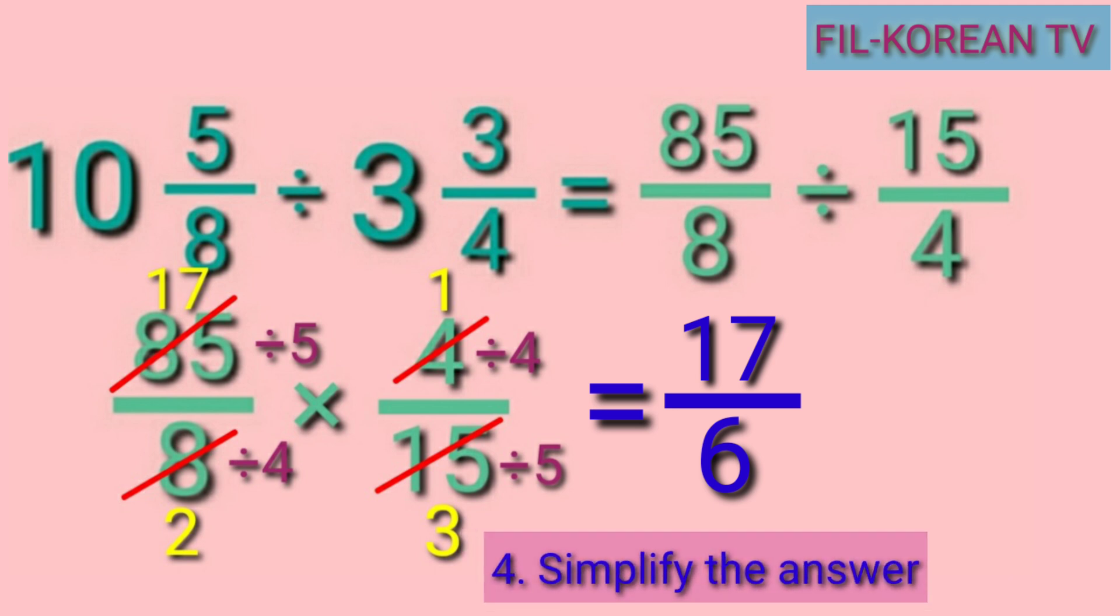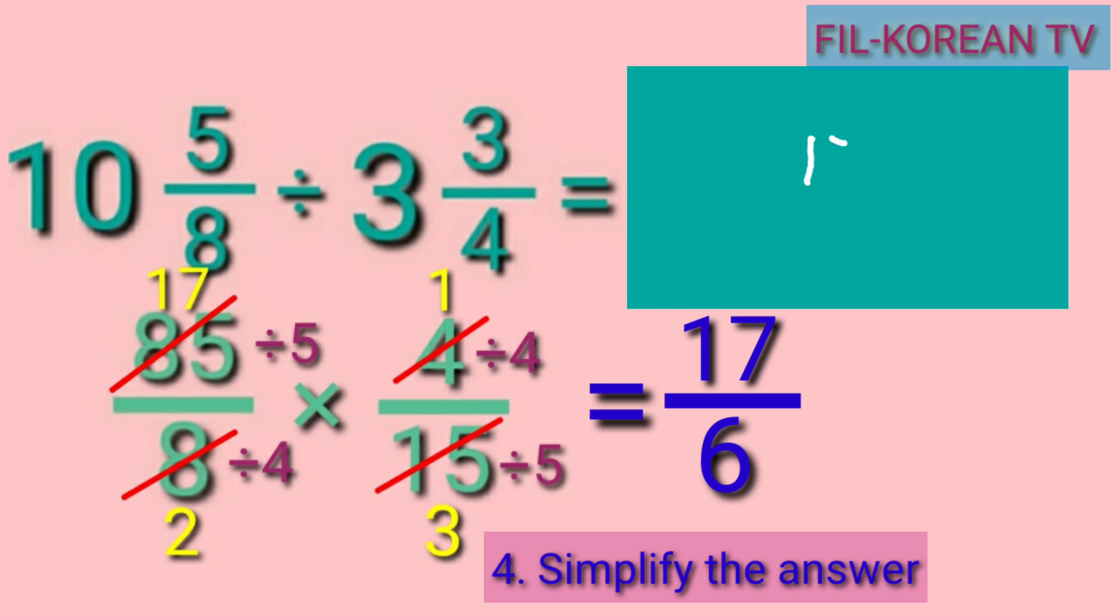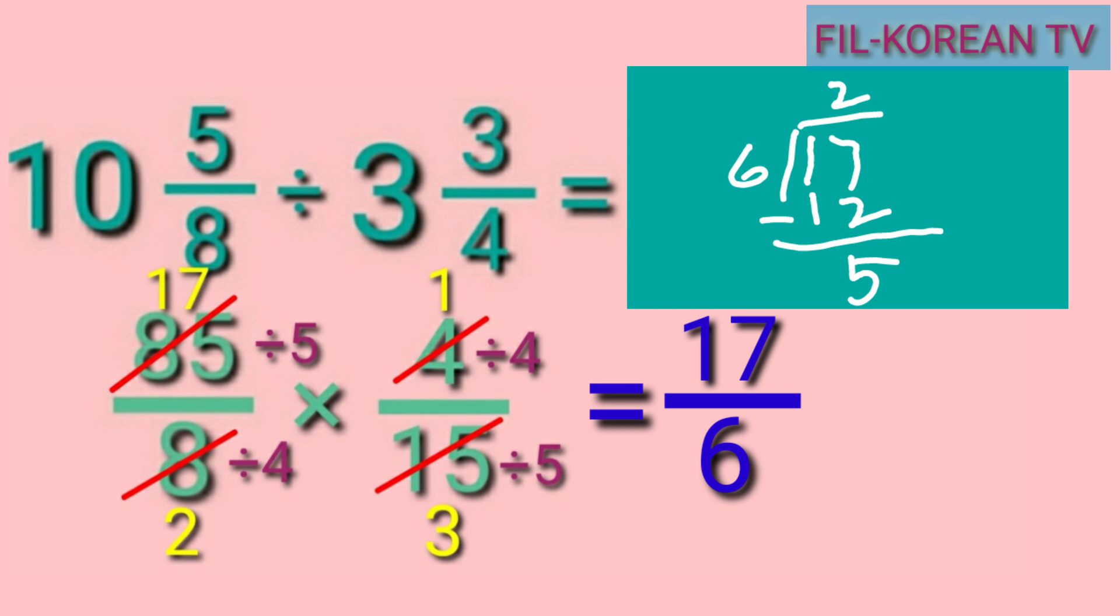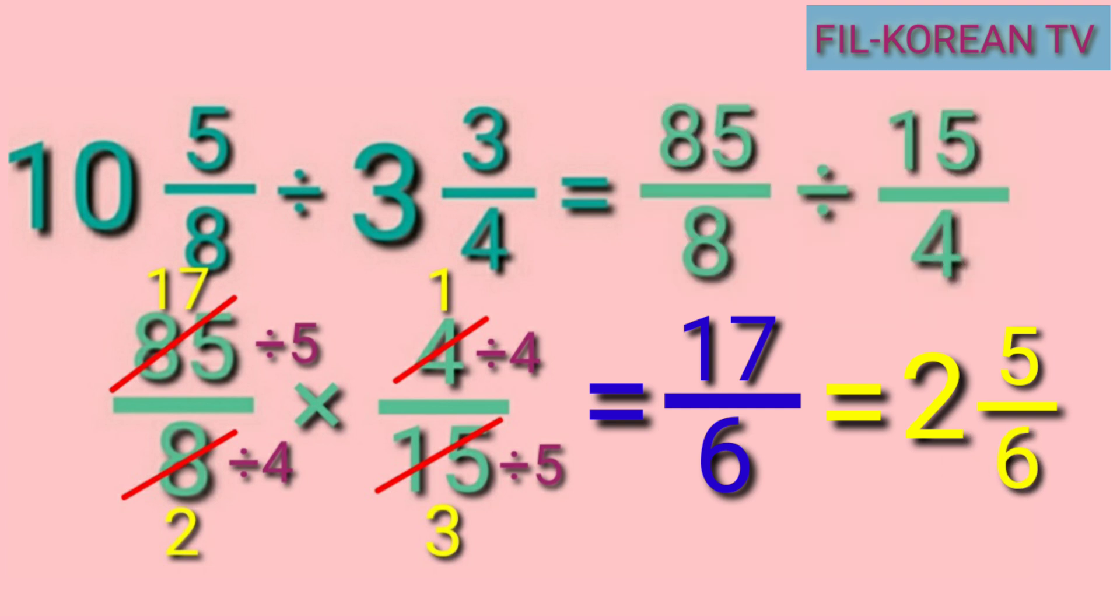It is an improper fraction, so we need to simplify it. We will divide the numerator 17 by the denominator 6. If we divide 17 by 6, the answer is 2 and the remainder is 5. The quotient 2 is the whole number, the remainder 5 is the numerator, and the divisor 6 is the denominator. So the answer is 2 and 5 sixths.